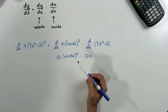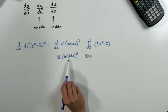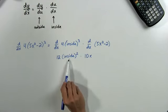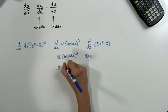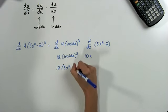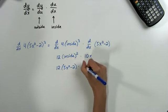It's starting to look a little better now. Our next step is to simplify. Since we're done taking the derivatives here, we can go ahead and fill in the inside with what it originally was, 5x squared minus 2. So that will give us 12, 5x squared minus 2, times 10x.